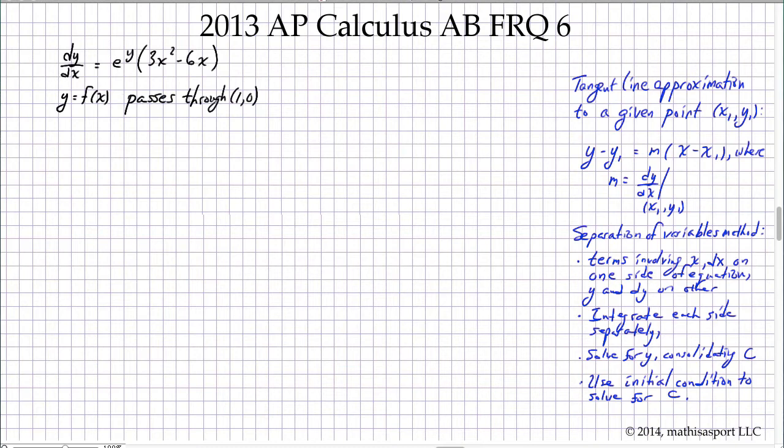The kind of information that will be useful here is the tangent line approximation as well as the method of separation of variables. Let's jump into part a. First we need to find the tangent line approximation using point-slope form, namely y - y₁ = m(x - x₁).